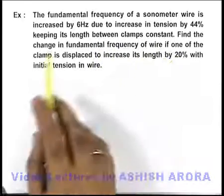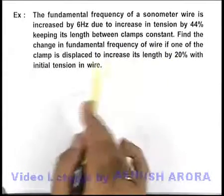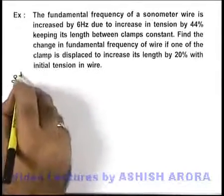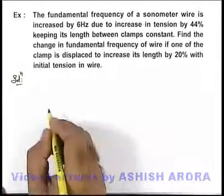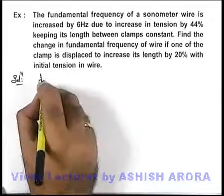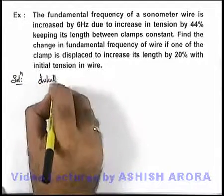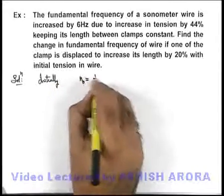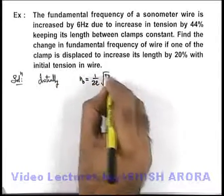It is asking: find the change in fundamental frequency if one of the clamp is displaced to increase the length by 20 percent, keeping the initial tension in wire. So here we can write initially, the fundamental frequency can be given as 1 by 2L root of T by mu.